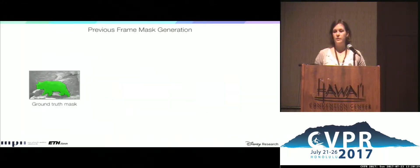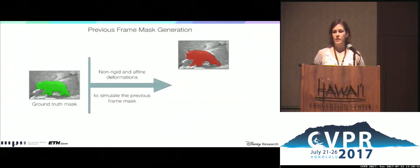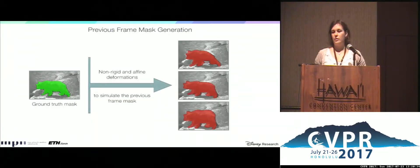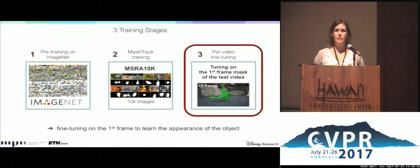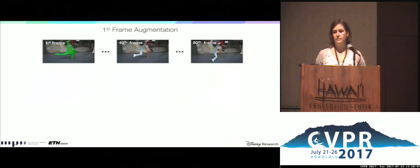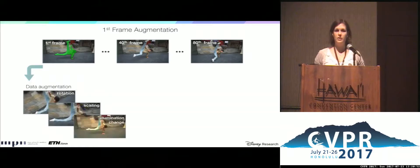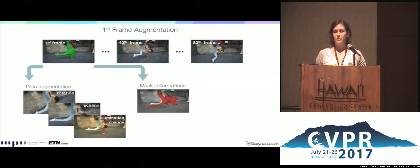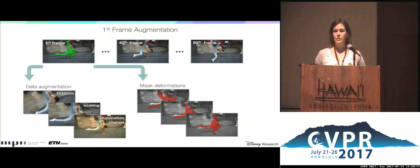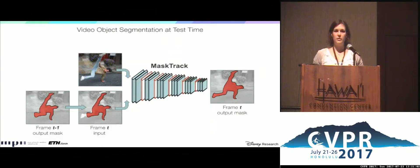To generate the previous frame mask, we apply non-rigid and affine deformations to the ground truth to mimic object motion in the previous frame. At stage 3, we fine-tune on the first frame to learn the specific appearance of the object. For this, we augment the first frame by applying rotation, scaling, and illumination changes, and also deform the mask to simulate the previous frame output. We then tune the network for a small number of iterations. At test time, instead of using the rough mask, we use the guidance from the previous frame mask.